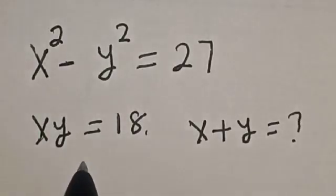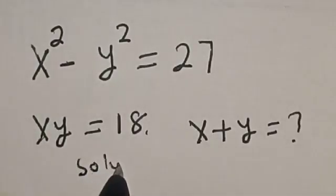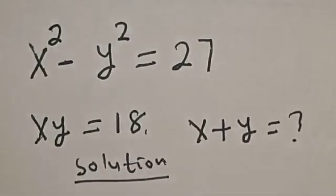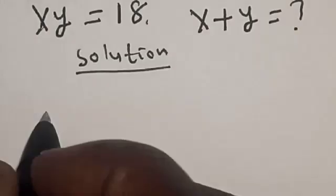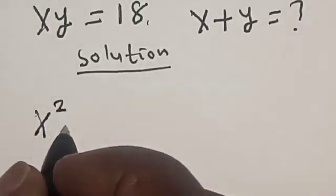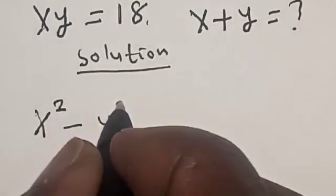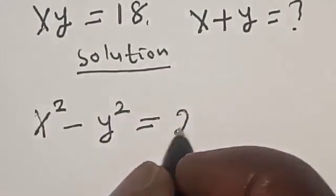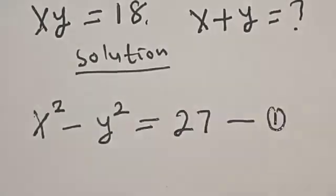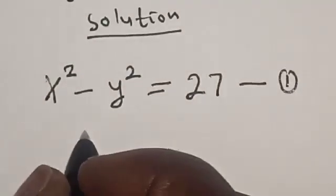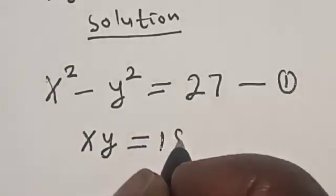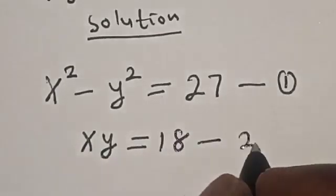Solution. We have the given equations: x squared minus y squared is equal to 27 — let's call this equation 1. Then we have xy is equal to 18 — let's call this equation 2.